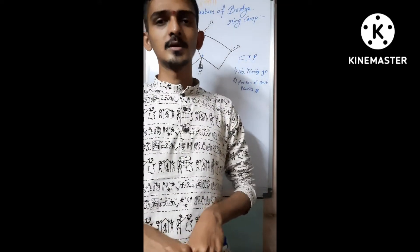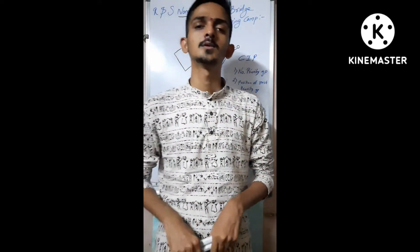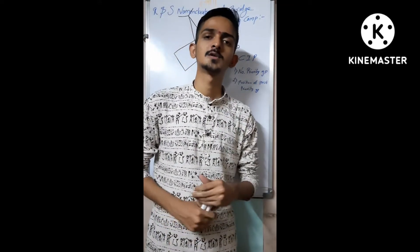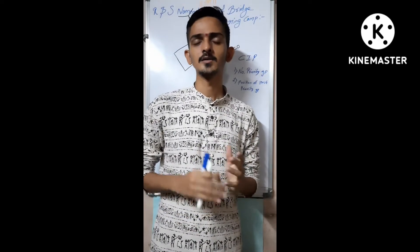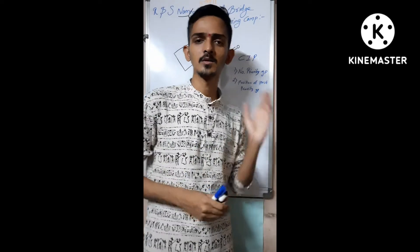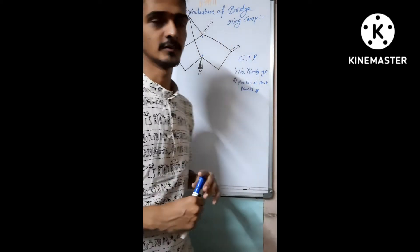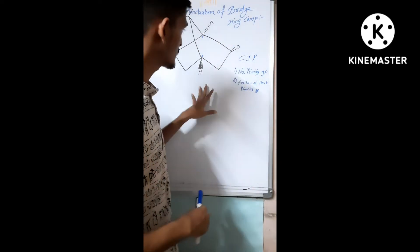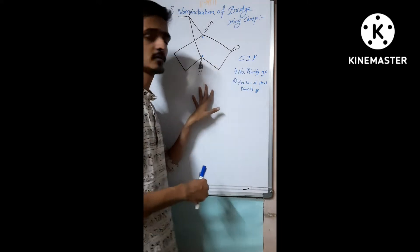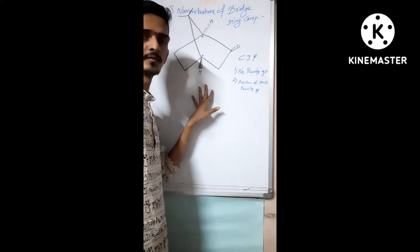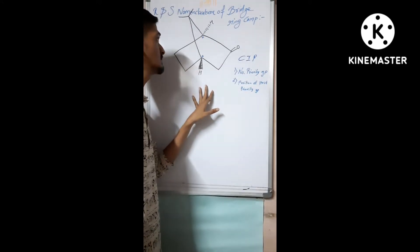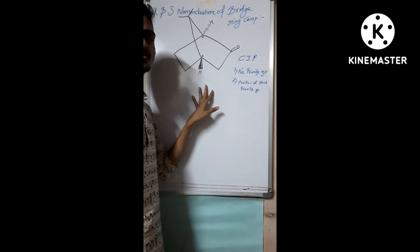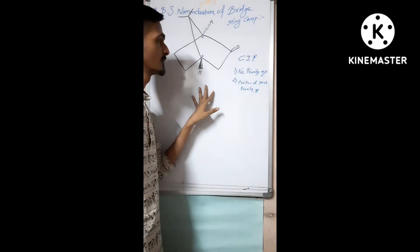Hello everyone, welcome to my channel. Today we are going to study about the RS configuration — RS nomenclature — of the bridging compound. I have taken one simple example of the bridging compound which has two chiral centers.